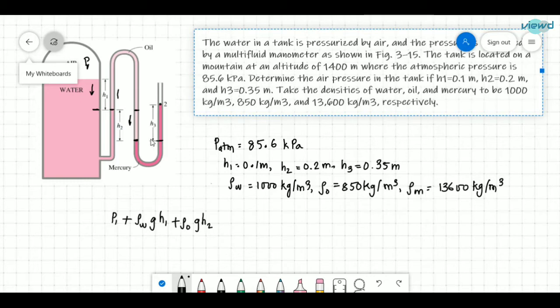I am jumping and I am going upside. So minus rho, this is mercury, rho Mg and H3. H3. And here there will be atmospheric pressure acting. So minus P atmospheric pressure is equal to zero.